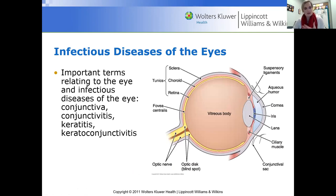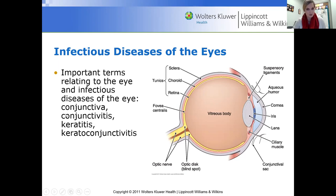Let's take a look at the eye. The cornea had a thin, delicate membrane on top of it called the conjunctiva. Sometimes the conjunctiva can become inflamed — that's where conjunctivitis comes in. Keratitis is inflammation of the cornea. And keratoconjunctivitis is a combination of the two, when the cornea and the conjunctiva are both affected.